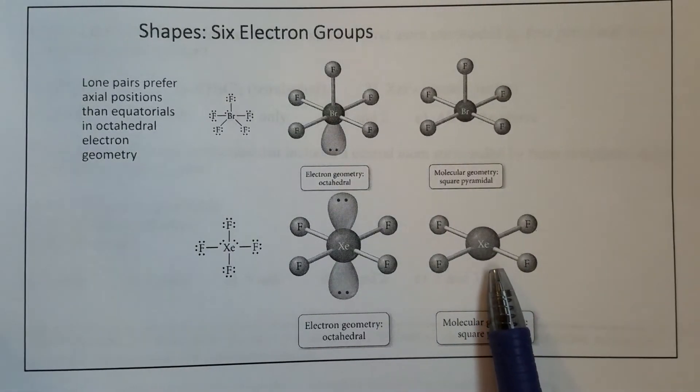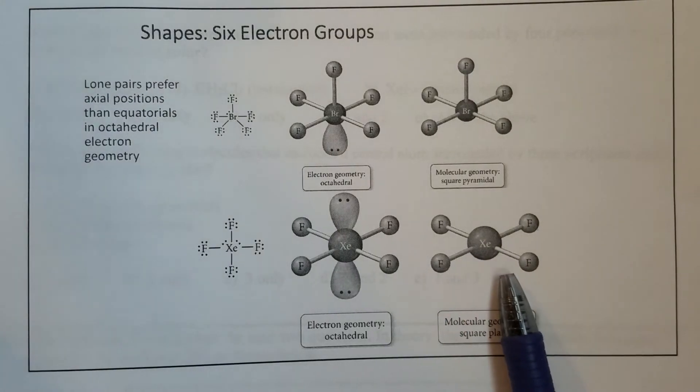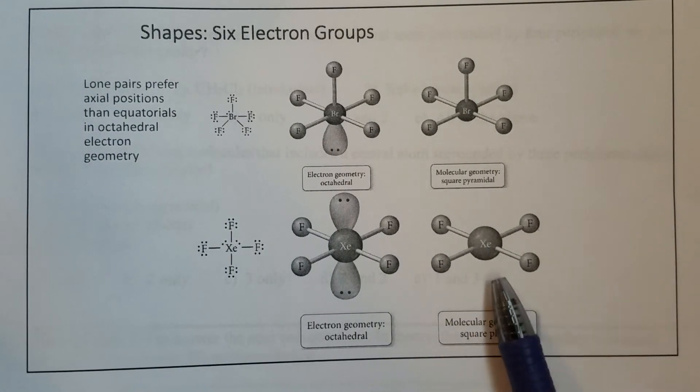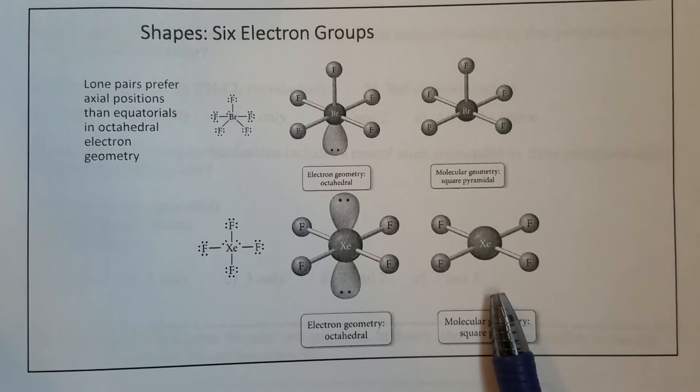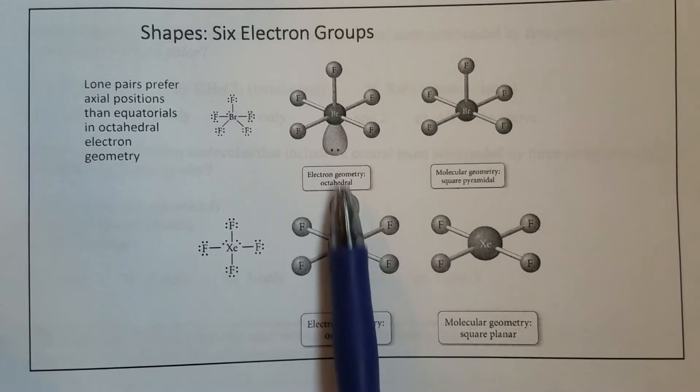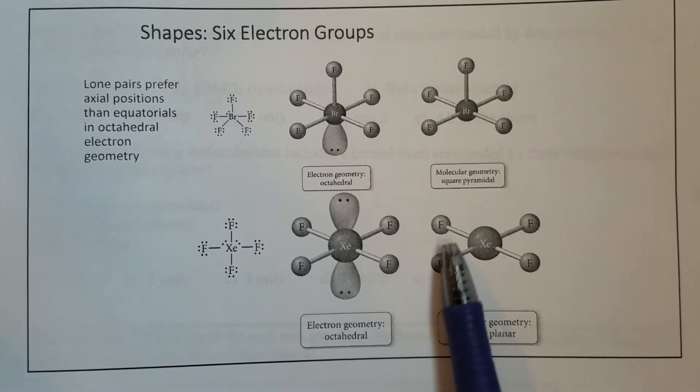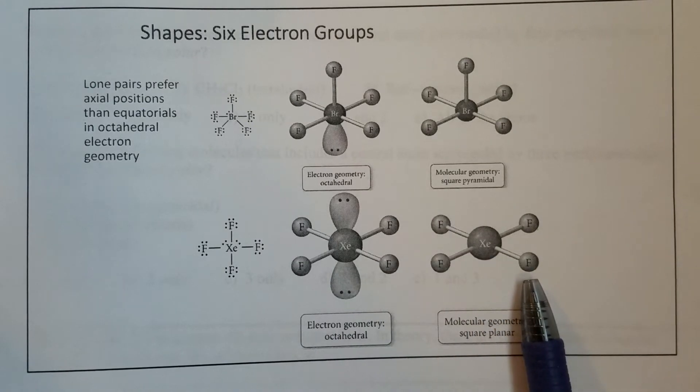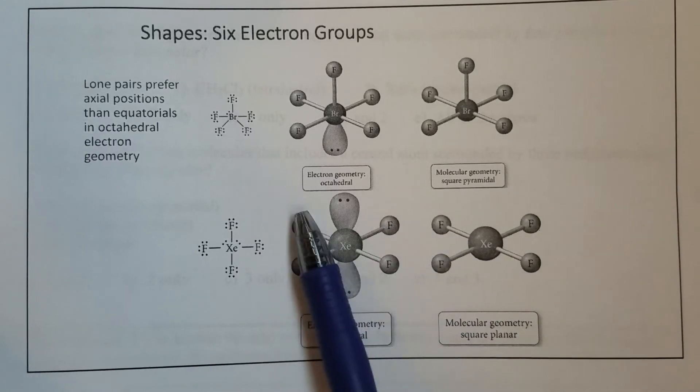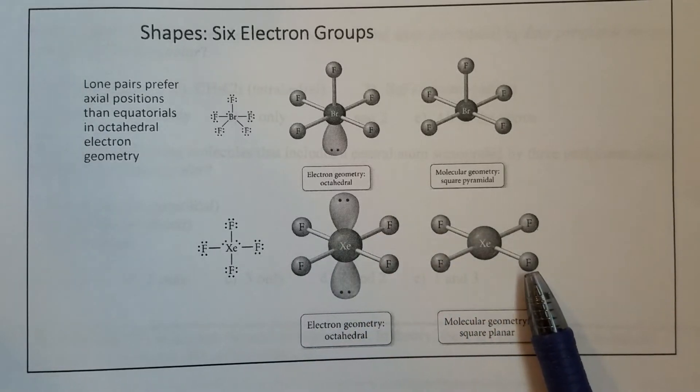We can take a look at this illustration right here. That's the xenon tetrafluoride, exactly the molecule we are talking about. The axial positions have two lone pairs. But when we talk about the polarity, depending on the molecular geometry, we only concentrate on the atoms with bonding.